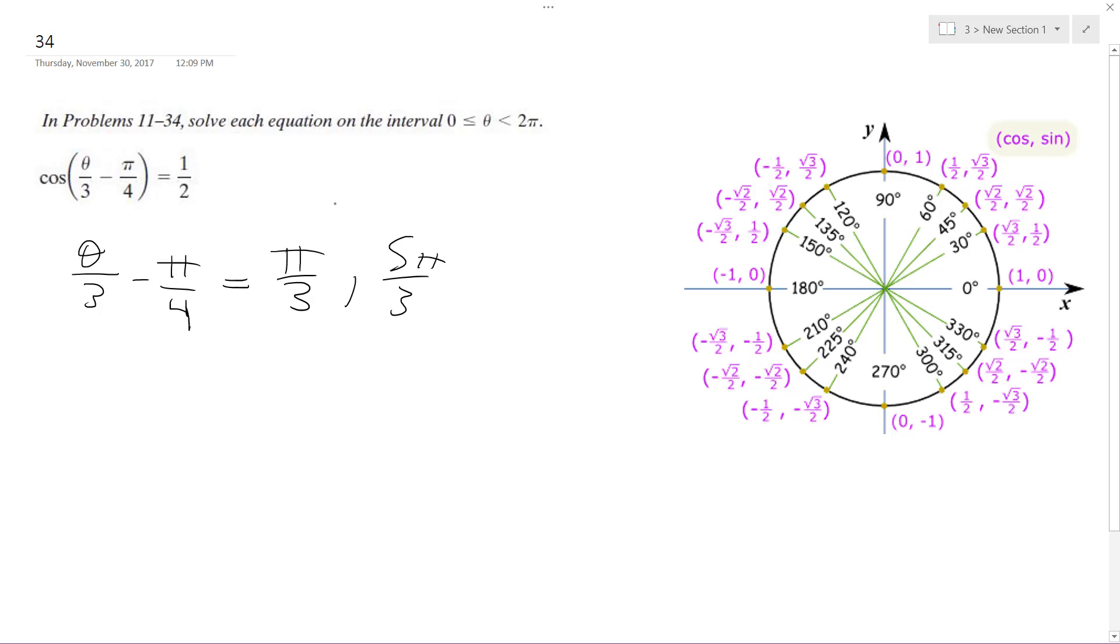So now, plus 2 pi k on both of these. Alright, so theta over 3 is equal to pi over 3 plus pi over 4 plus 2 pi k and 5 pi over 3 plus pi over 4 plus 2 pi k.